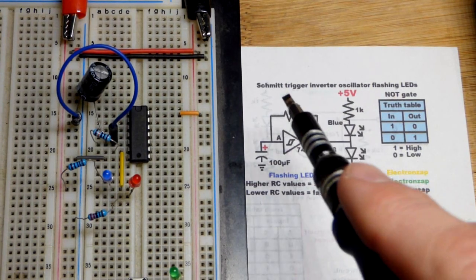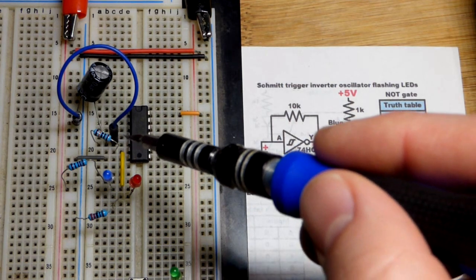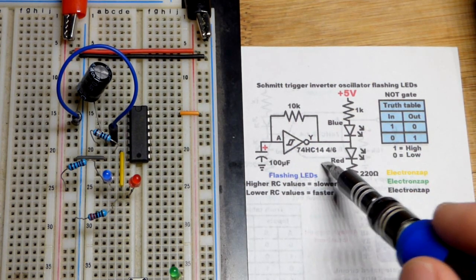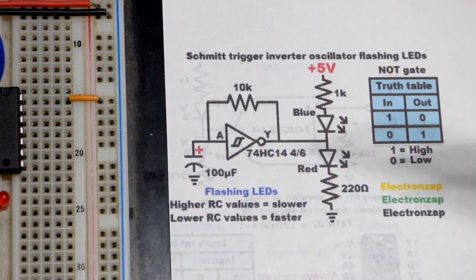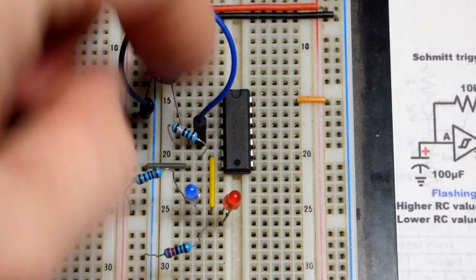All right then, so now in this video we're using one of the Schmidt gate inverters that we have on this integrated circuit. I wrote number four on my little diagram right here, but I'm actually using number three over there. So this is an old diagram.